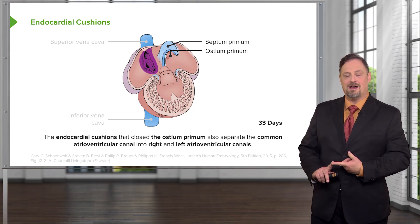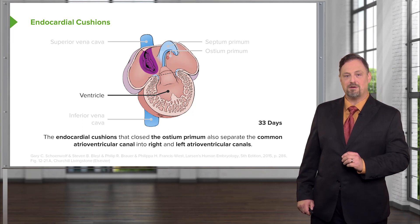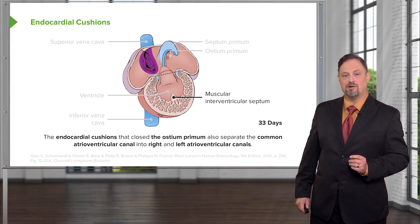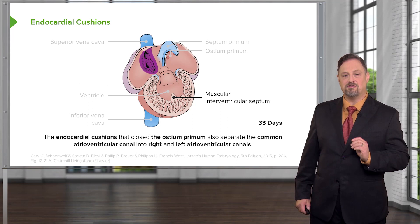Blood is going to leave the atria and travel to the single ventricle, which will then pump blood to the bulbus cordis. We can see that we're starting to get a little bit of muscular upgrowth from the base of the ventricle towards the atrioventricular region, and that's going to be the first step in separating the two ventricles, right and left.